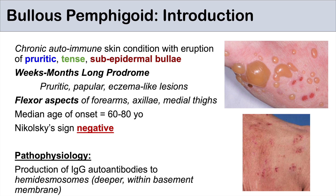In bullous pemphigoid, it's IgG autoantibodies to hemidesmosomes. These hemidesmosomes are deeper — they're actually within the basement membrane. So instead of the IgG autoantibodies attacking the surface, they're attacking the basement membrane underneath. That's why the outer layer is very tense and difficult to erupt, because it's not weakened — it's the basement membrane that's been weakened underneath.